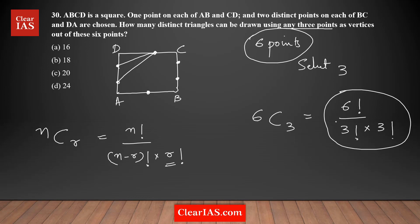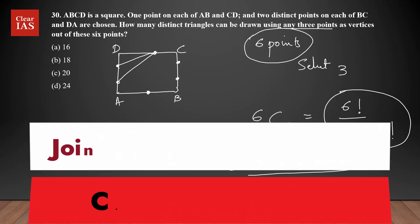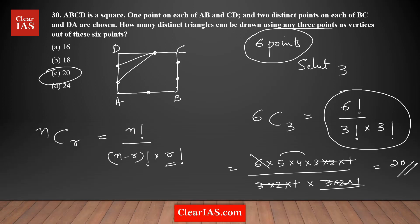You just need to simplify further. Six factorial is 720 and three factorial is six. You can see that most of the terms cancel — three times two times one cancels, leaving only five times four. So your answer is 20, and option C is the right answer.